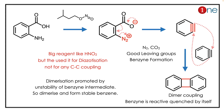Nitrous acid helps with diazonium salt formation. So from the amine you get a diazonium salt with N2+, and you have an anion in the same system — CO2 and N2 are both good leaving groups. What really happened is a benzyne mechanism. It's an interesting reaction because you are not converting from a halide; you're converting from an acid and an amine.